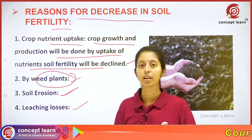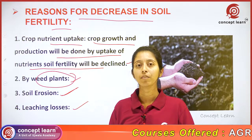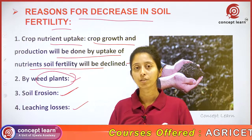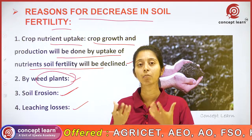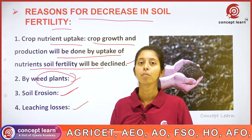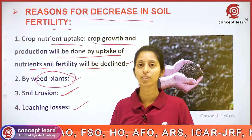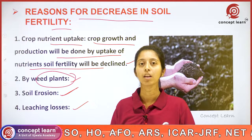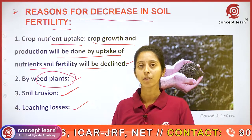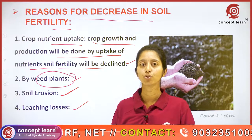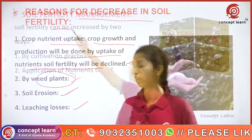Leaching losses are also a factor. If we are giving excess irrigation, the nutrients in the root zone get leached — they move down below the root zone. Because of this leaching and loss of nutrients from the root zone to below the root zone, the soil fertility is reducing.